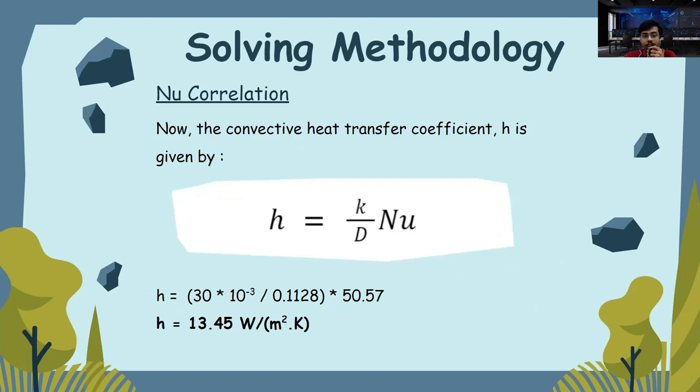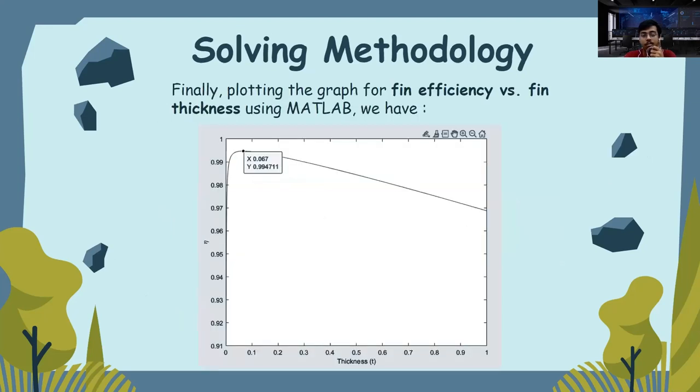Now, the convective heat transfer coefficient is given by h = (k/d) × Nu. So, substituting the values, we get h equals to 13.45 Watt per meter square Kelvin. Now, finally, we plot the fin efficiency versus fin thickness graph using MATLAB and we can observe that at t = 0.0067, we have a maxima giving efficiency equals to 0.9947.